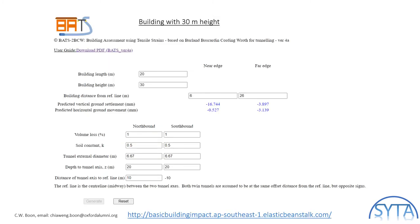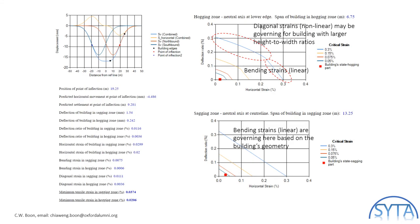You could calculate the impact of ground settlements to a building using the Burland and Wroth tensile strain approach using BATS, a cloud-based program. The link is given at the bottom of this page. With BATS, you will be able to generate the settlement trough for a pair of twin tunnels and estimate the magnitude of settlement. You will also be able to generate a damage trough, with a trough for the hogging zone and a different trough for the sagging zone. Both bending and shearing modes of deformation are being checked.